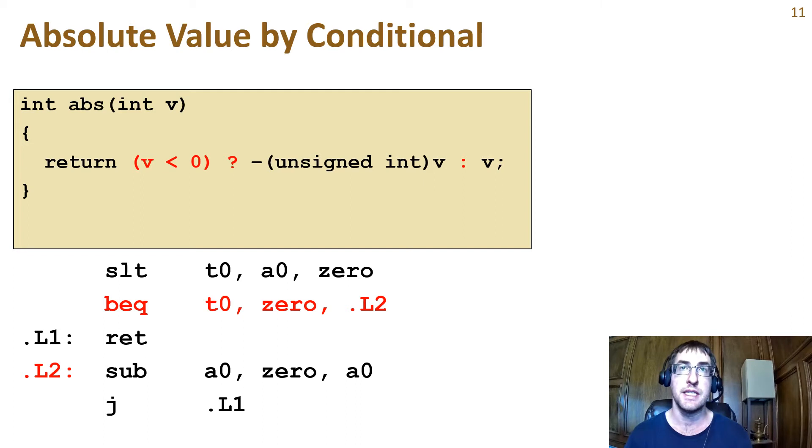The condition used in the assembly here is the less than inequality. We know that we have a 0 in T0 if V is non-negative. We can use a branch if equal, or BEQ, instruction to compare T0 with 0. If the two registers are equal, then the program counter will become the address of the instruction located at the label provided in the branch instruction. Here, that is .L2. Otherwise, if T0 is not 0, then the next instruction in program order will be fetched as usual. This means the program execution will branch if V is negative.